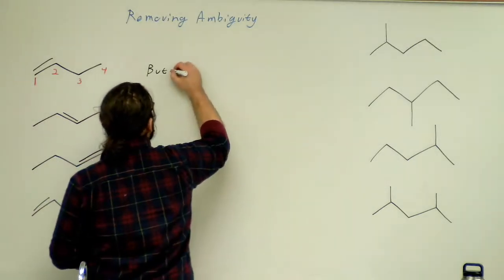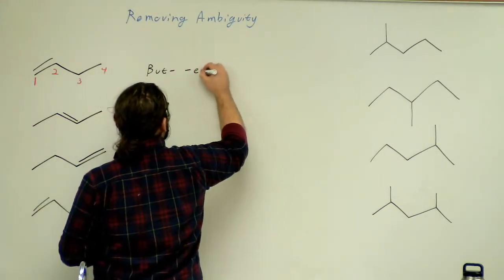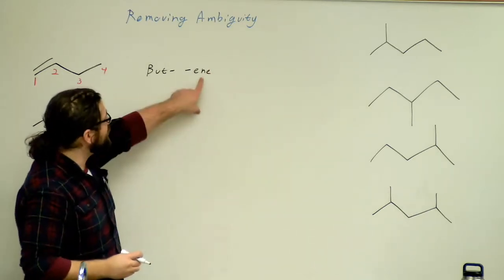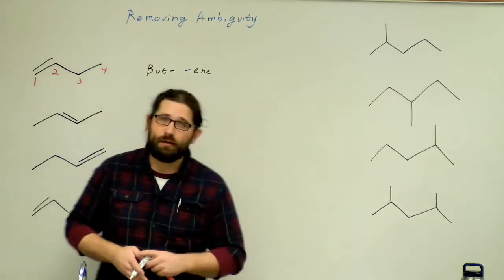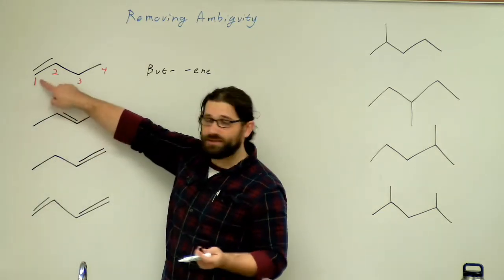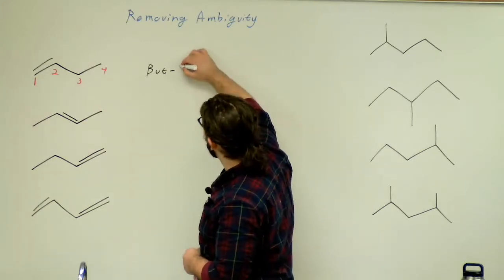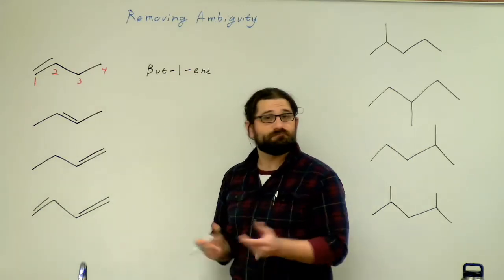I'm just going to leave myself a little space here. So this is going to work just like normal, but the only difference is before the ene, I'm going to write the number associated with the carbon that it starts on. So this will be number one. So this will be but-1-ene.